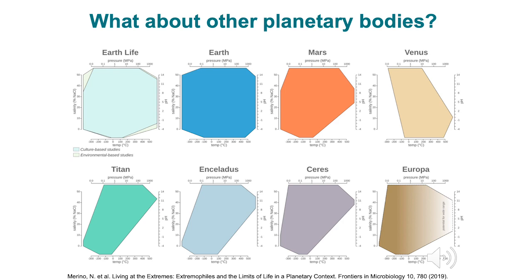When we look at the environmental conditions on the planets Mars and Venus, the dwarf planet Ceres, as well as the icy moons Titan, Enceladus, and Europa, we can see that there are some portions of those planetary bodies which match up to the environmental conditions on Earth. So by studying the modern-day analogs on Earth, we can further understand life itself and also explore the potential for life in the universe.